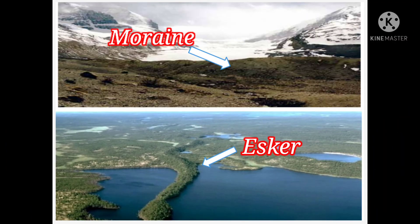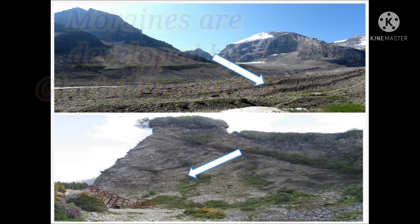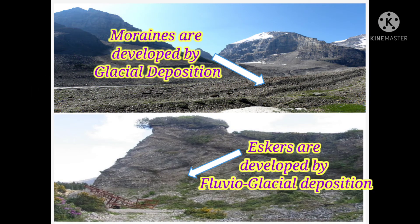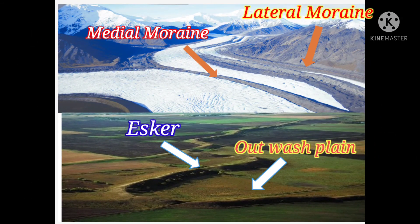Escars are often confused with Morhen. We should know that Escar and Morhen may have similarity only in their shape, but there are strong differences between them. Firstly, Morhens are made up of glacial deposition, whereas Escars are made up of pluvio-glacial deposition. Secondly, Morhens may develop at the side, at the base, at the middle, or at the end of the glacier, but Escars develop only in the outwash plain at the foot hill of the mountain.